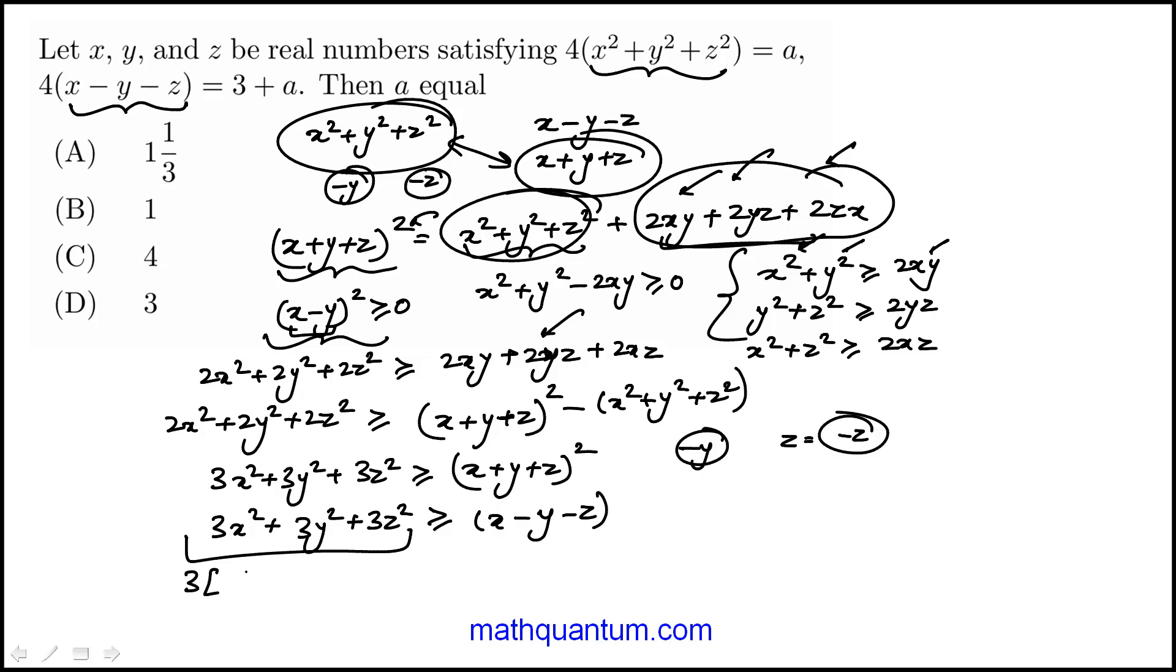That piece becomes 3 times x squared plus y squared plus z squared, which is a over 4. And then here, x minus y minus z is... Actually, I need to make sure this is a square. So that would be 3 plus a over 4 square.